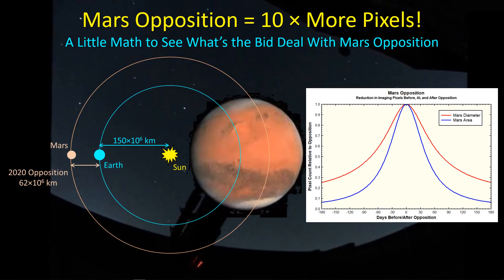Hey guys, welcome back. Mars has been in the news lately because we're approaching opposition and of course my timing is perfect. I have just taken down my SCT and switched the imaging equipment over to my wide-angle 81mm refractor, and so now I'm wondering what with opposition being here should I take the SCT out and do some imaging on Mars.